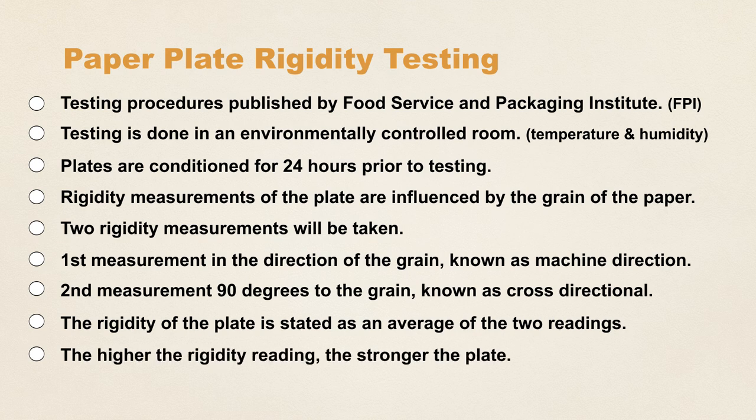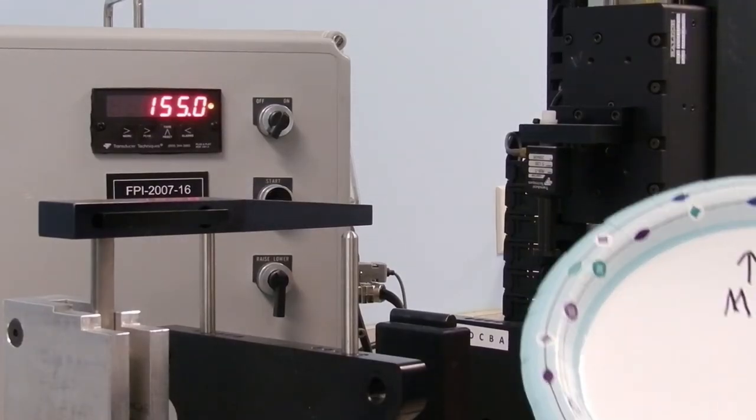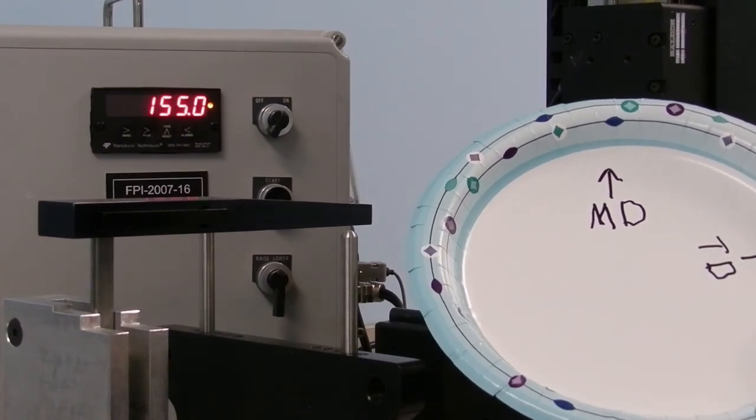The higher the rigidity reading, the stronger the plate. Note that the plate has been marked indicating the machine direction and cross-direction.